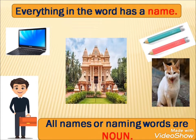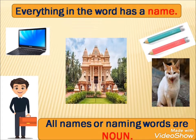So children, everything in the world has a name. As you can see on the screen, everything has a name — you also have a name. So we can say that all names or naming words are Noun. I repeat: all names or naming words are Noun, because in this world, everything around us has a name.